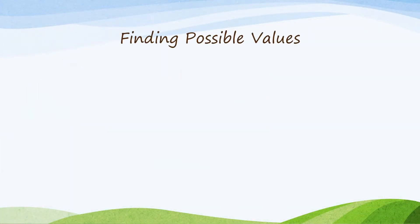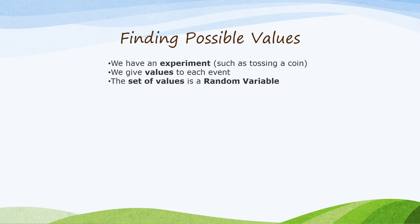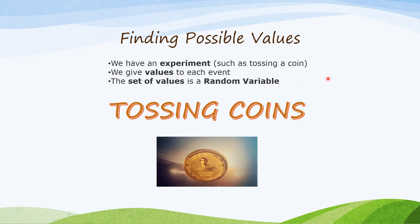For us to be able to find possible values, let us consider this example. For example, we have an experiment, and the experiment is tossing a coin. Then, we give values to each event. Then, we have to set values for the random variable. So, let's have the first one — tossing a coin.